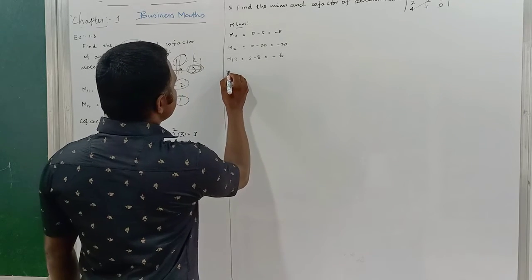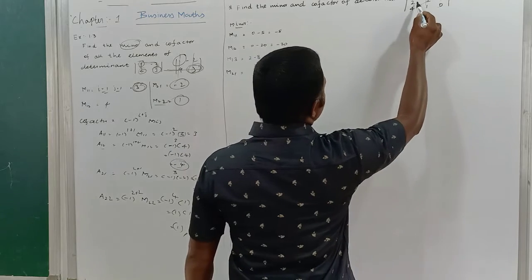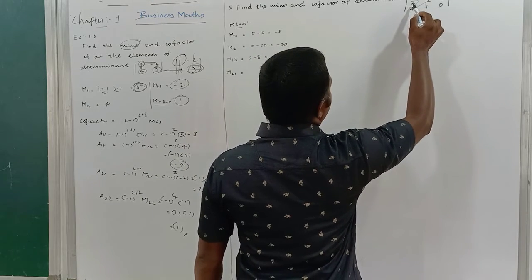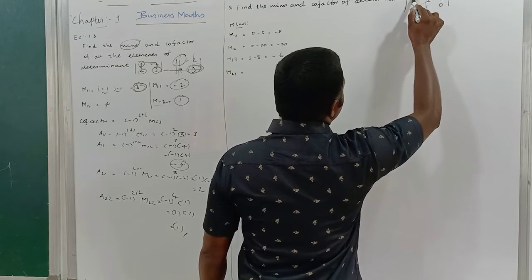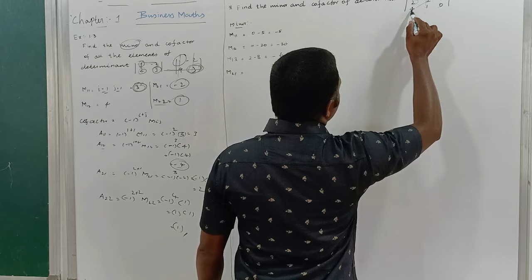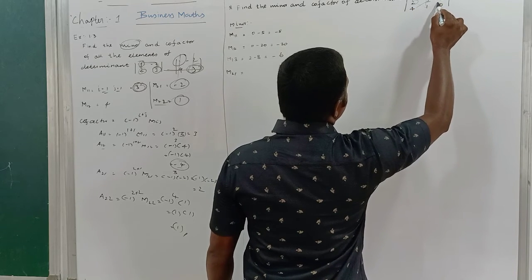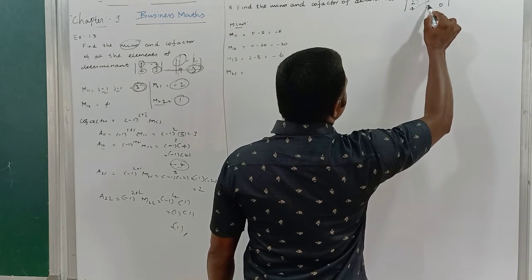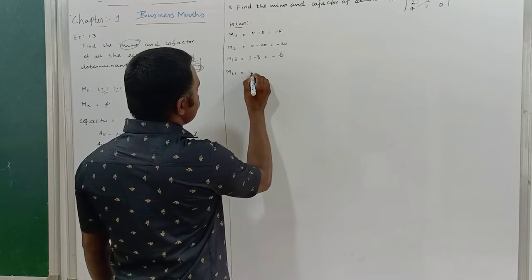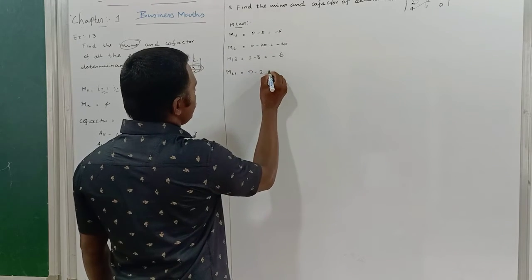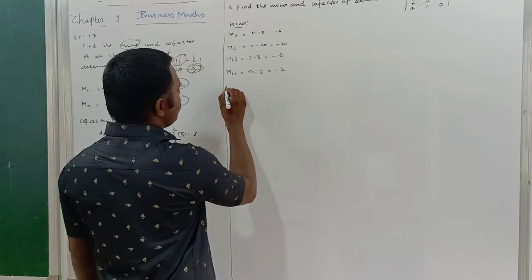Minor M21: second row, first column. I remove that row and column. Computing: 1×0 = 0 and 1×2 = 2, giving 0 minus 2 = minus 2. So M21 = minus 2.